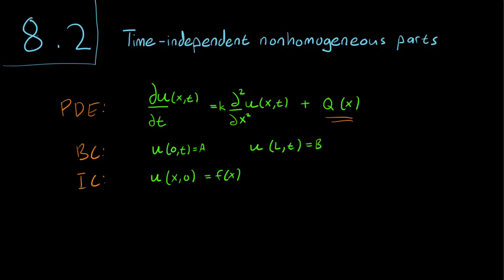Generally, any term that doesn't contain a u, a u prime, or so on, will cause the equation to be non-homogeneous. We also have boundary conditions that are non-homogeneous — we have these terms a and b — and our initial condition as usual. It's important that all three of the non-homogeneous terms in this problem do not have a time dependence. This technique only applies if the non-homogeneous parts don't have a time dependence.